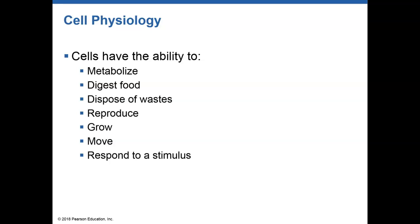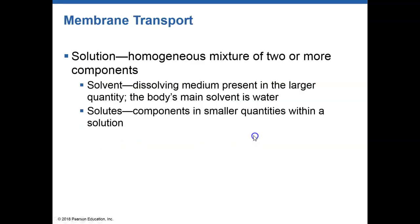Some cells are also able to reproduce, producing new cells. Some cells are able to respond to stimuli. Some cells can move while others can't — sperm and egg are examples. Before we talk about that, let's talk about how materials enter into chemical reactions and move around. To understand chemical reactions, you have to understand what a solvent and a solute is.